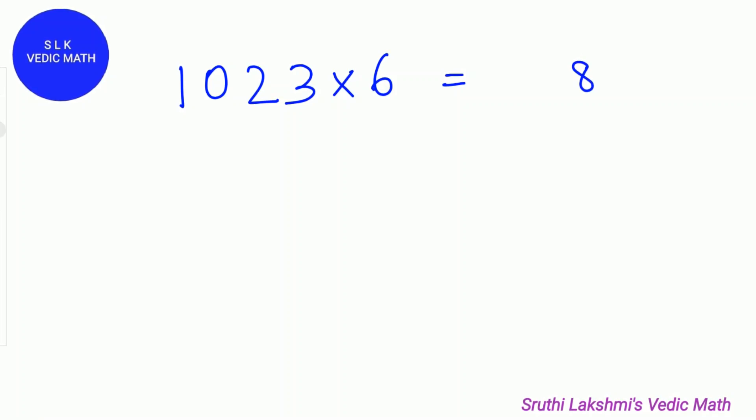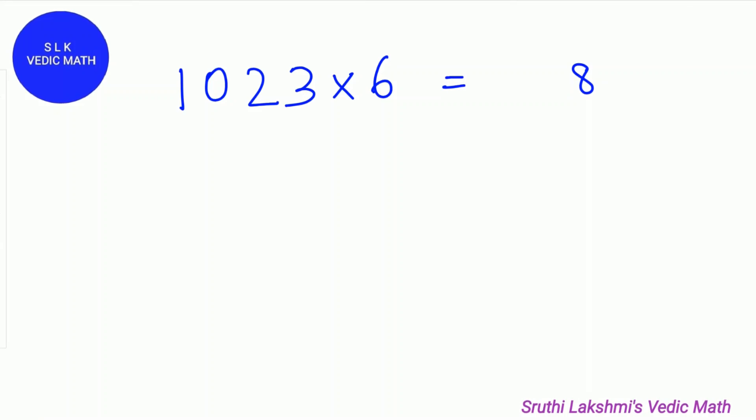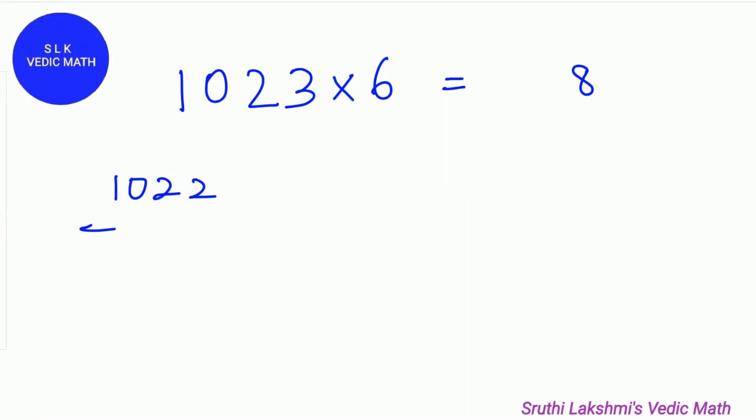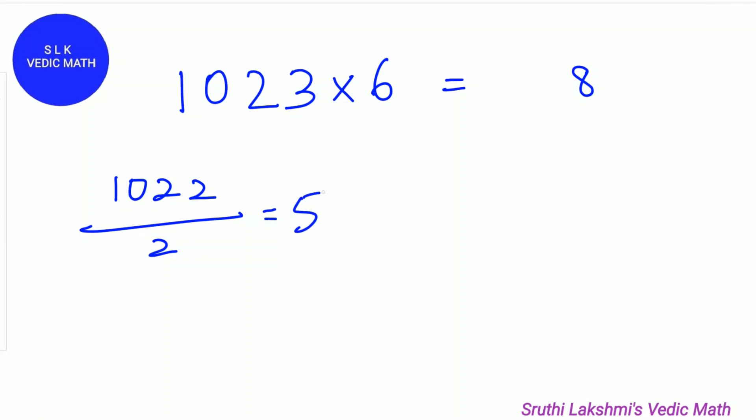To make 1023 as an even number, we reduce 1. So it makes 1022. We divide 1022 by 2 which gives us 511.